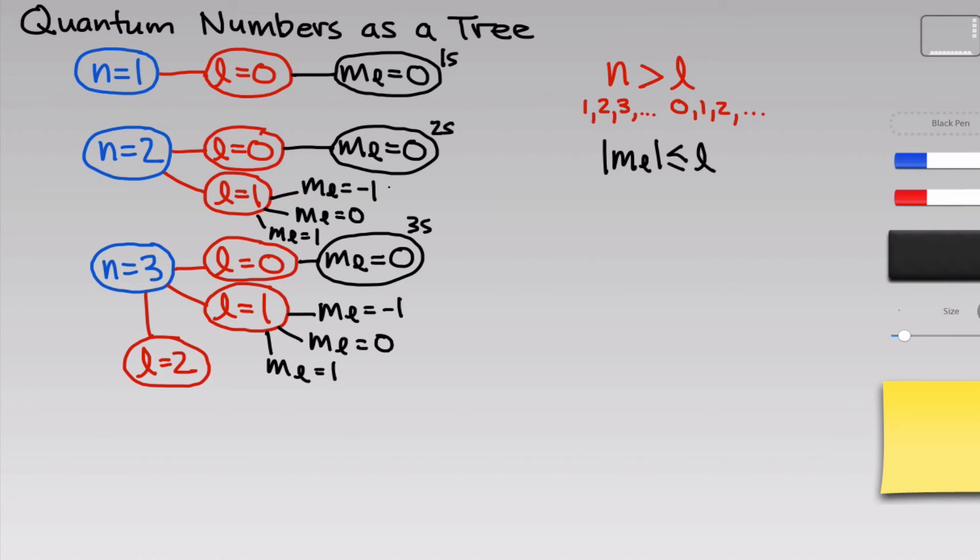And you may recognize these as, for example, the 2px, 2py, and 2pz orbitals. m sub-l dictates the direction. Down here we have the 3px, 3py, and 3pz orbitals. And don't worry too much about x correlates with negative 1 and y with 0 and etc., because those assignments are arbitrary.